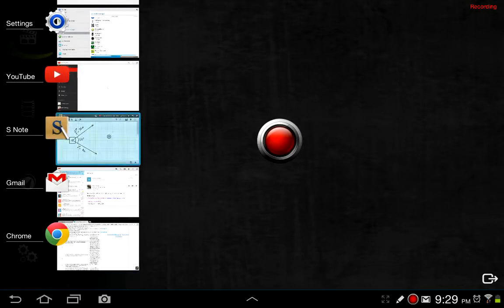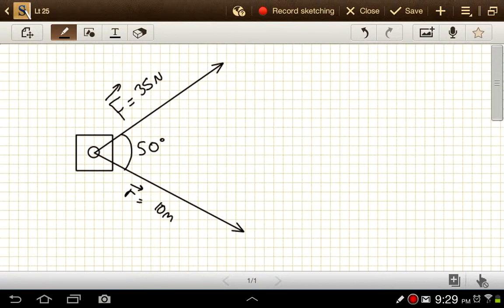Learning target 25 is again about calculating work. This time they're specifying that we're going to be using the dot product to calculate work for some object that's moving in two dimensions, not just one dimension anymore.